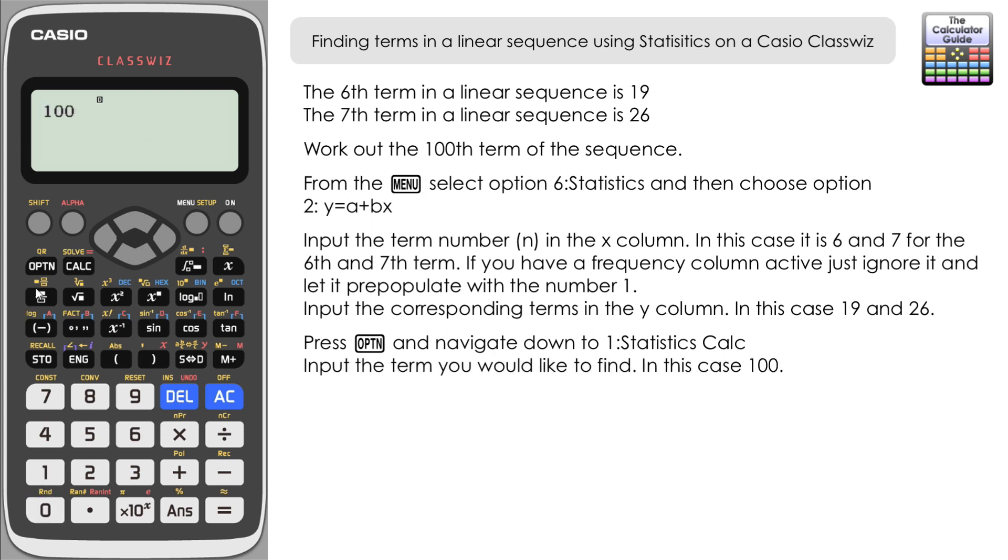Then before we press anything else, press option and we're looking for regression. Not Regression Calc on the first page—you need to scroll down to the next page, and it's 4:Regression. We've got various options here. What we want to use is the last one, which is Y with a little hat on the top—Y-hat. It's got this hat shape thing on the top, so press 5. What this is essentially asking the calculator in the circumstances of this question is: I'm looking for the 100th term, what's the Y? What's the term in the sequence?